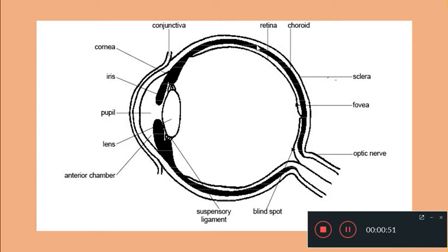The middle layer which is vascular is called as the choroid, and the innermost layer is the retina. So the outer sclera, middle choroid, and inner retina. Retina is the photosensitive layer.